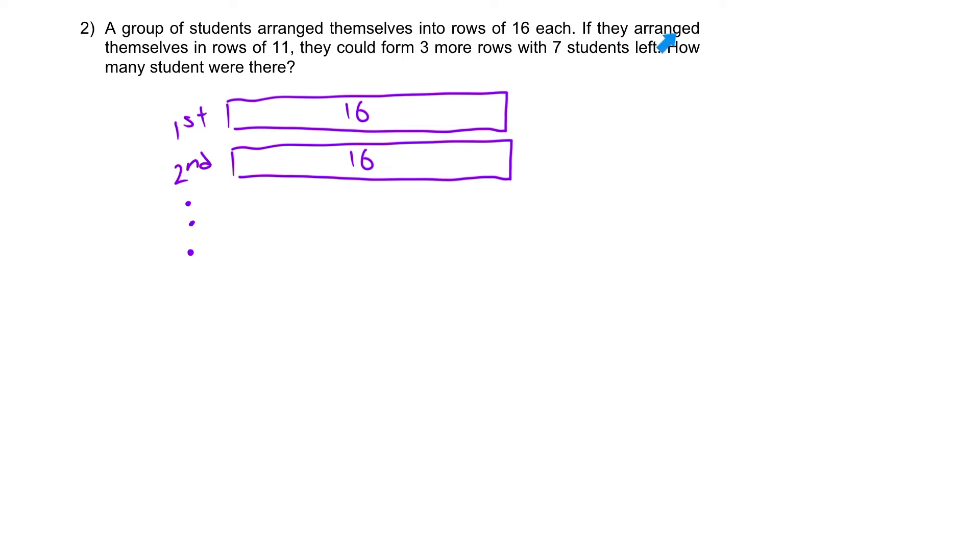Next, something happened. They decided to rearrange themselves into rows of 11. Okay, so out of this 16, now they just want to have 11. So we're going to partition this out, five, five people over here.